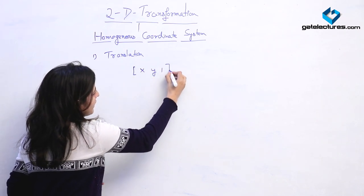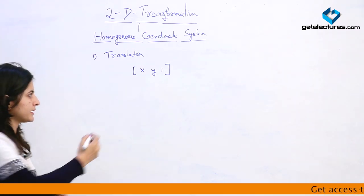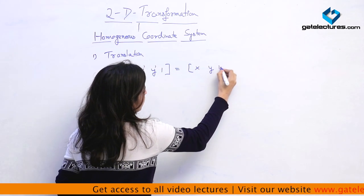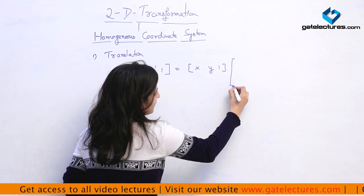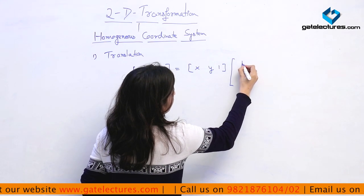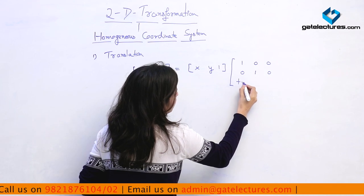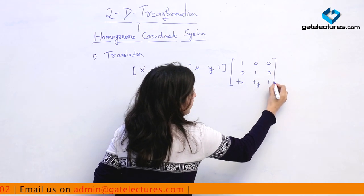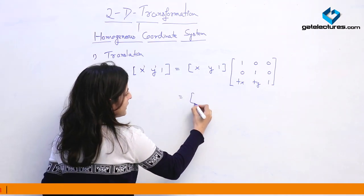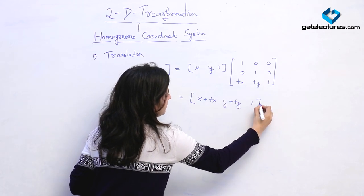The equation will be [x, y, 1] — here 1 is only for converting them into a 3×3 matrix — giving [x', y', 1] equals [x, y, 1] multiplied by the matrix: [1, 0, 0], [0, 1, 0], [tx, ty, 1]. This is the 3×3 representation of translation. If we solve this we will get x plus tx, y plus ty, and 1.